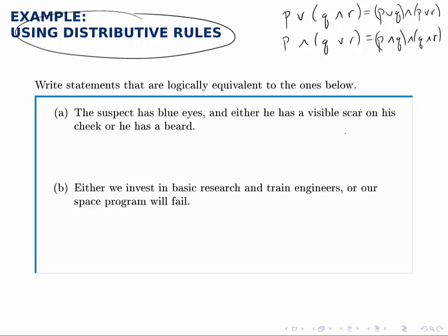So let's consider having blue eyes to be P, and then we see AND either he has a visible scar or a beard, so that's a grouped piece.